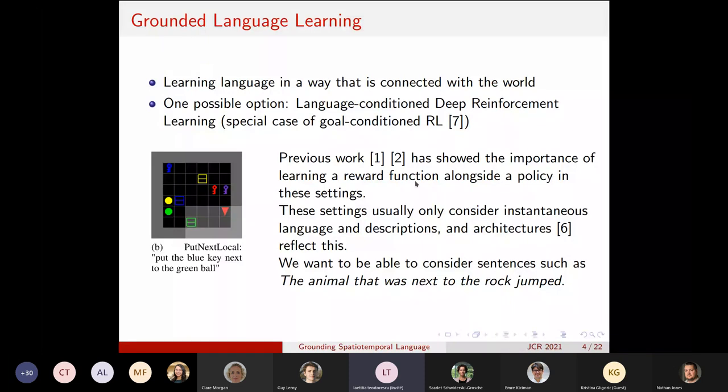To learn to say if a given sentence is true or false in a given state of the world. So the settings, for instance, here you can see on the left side, one of the classical works in this field, which is called Baby AI. You can see here the environment, which consists of a grid world with several objects scattered around with their colors and their shapes.